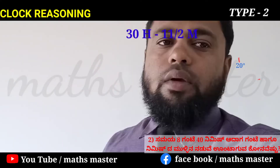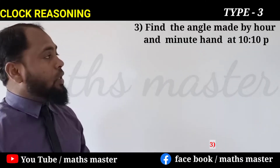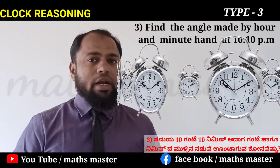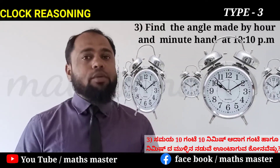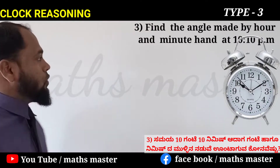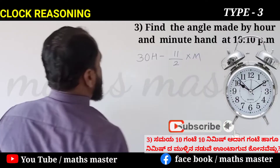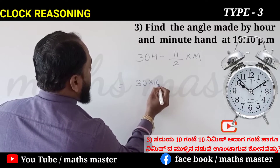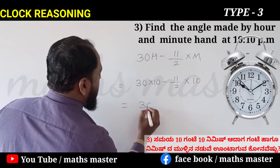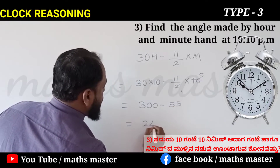Now come to one more new problem. What is the angle made by the hour and minute hand at 10:10 PM? The procedure is the same: 30H minus 11 upon 2 into M. So 30 into 10 is 300, minus 11 by 2 into 10, which is 55. So 300 minus 55 equals 245.